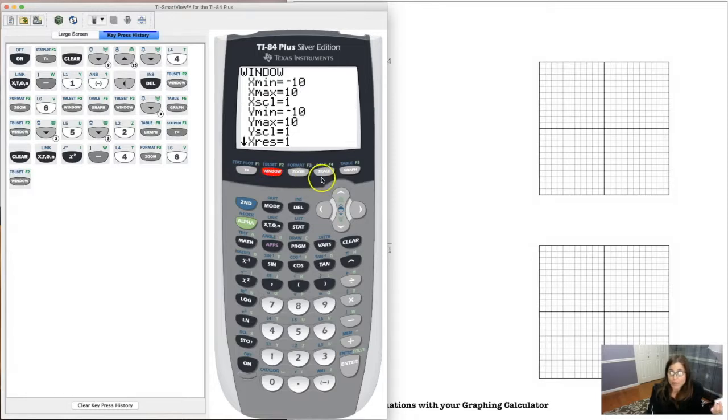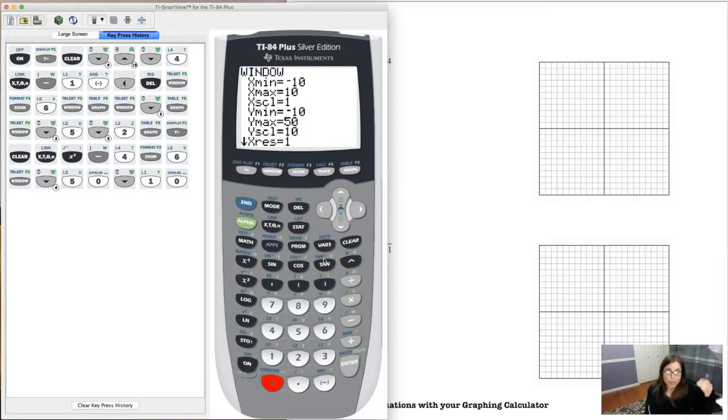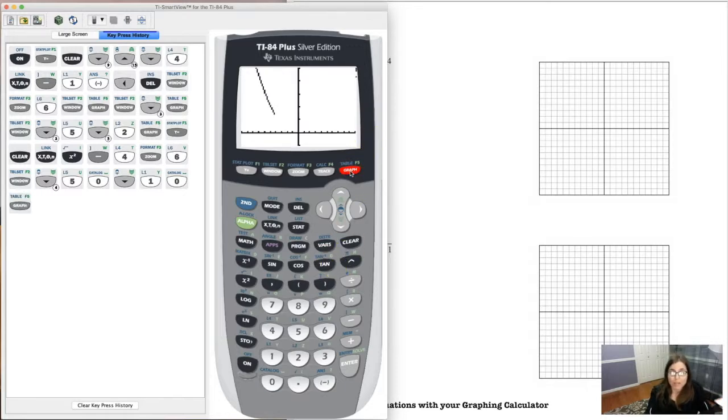And again, if you ever want to adjust your window, let's say you felt like going, you wanted to see more of the parabola. Let's say I wanted to go up to 50. I don't know why, I just feel like it. Now, I don't want to make a tick mark every one unit. Maybe I'll make a tick mark every 10 units, right? And just feel free to try whatever window you want, and then again, if you ever adjust your window, don't hit zoom 6, because that'll just go back to the standard window. Once you've messed with it a bit, hit graph, and we should be able to see a much taller part of our graph, because now we have a y value of 50 up here, okay?